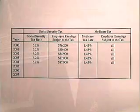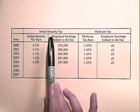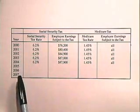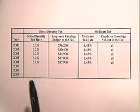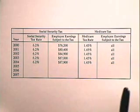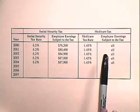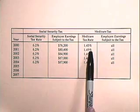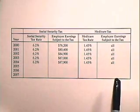Let's begin by looking at some definitions and then some examples of FICA and Medicare tax. FICA is the Federal Insurance Contributions Act, which is now called Social Security, and it gives monthly benefits to retirees. Here we have the rates for FICA taxes from the year 2000 to 2004 — the rate is 6.2%, applied to employee earnings subject to the tax. Medicare tax provides health care for retirees; the rate on Medicare is 1.45%, and it applies to all employee earnings.